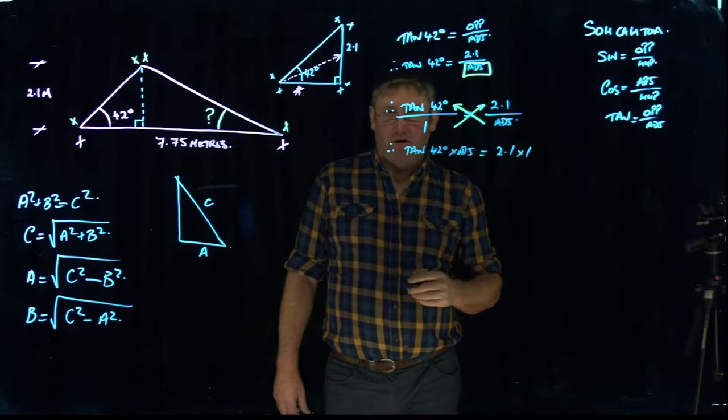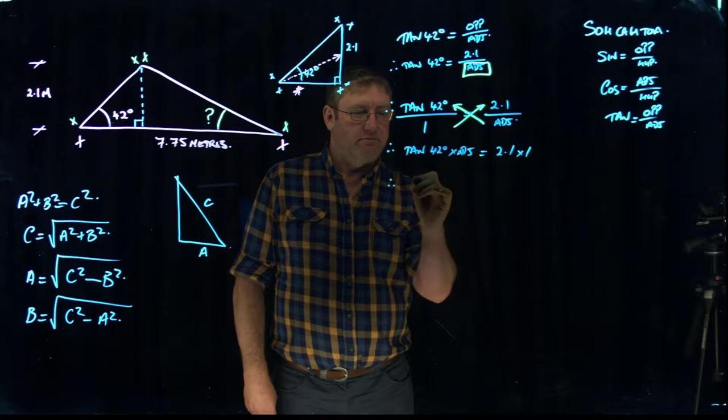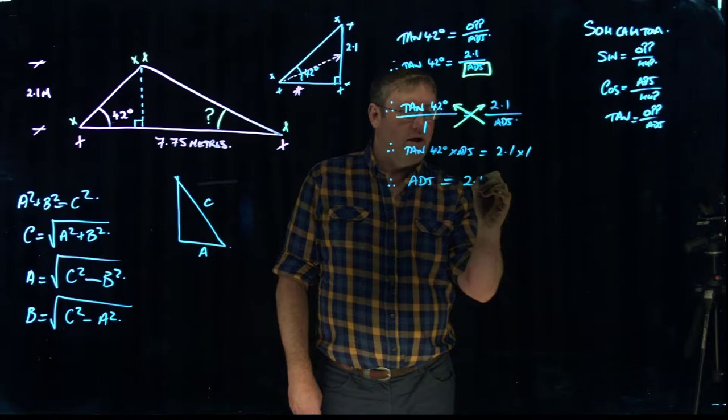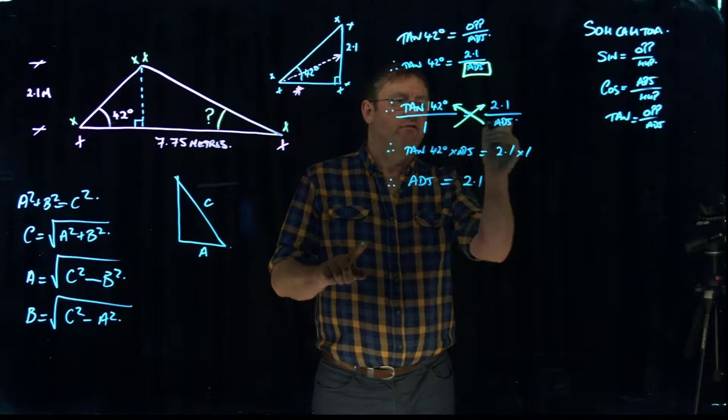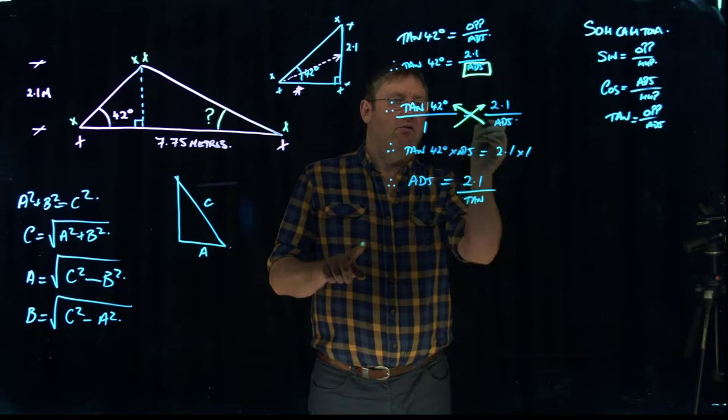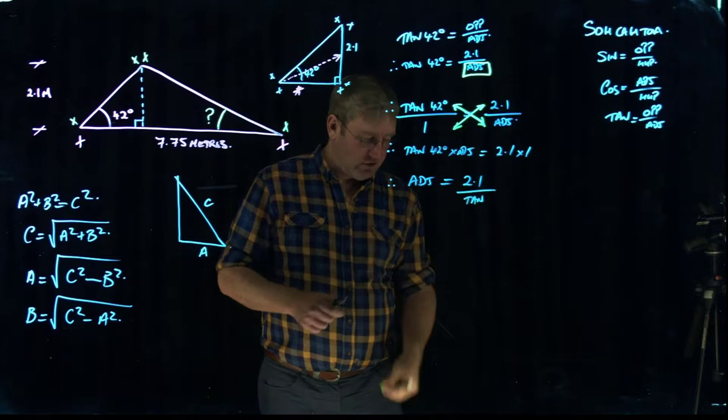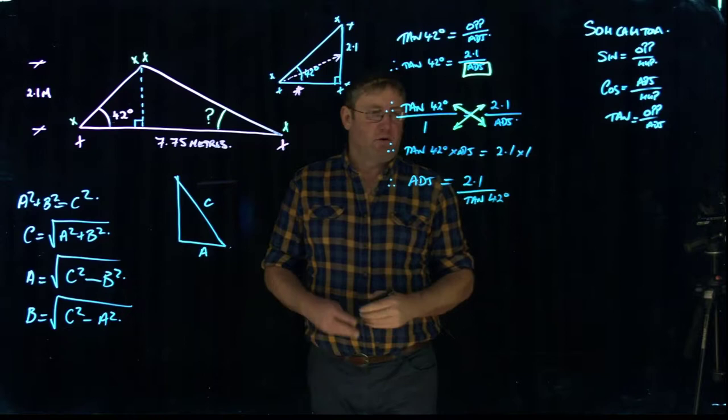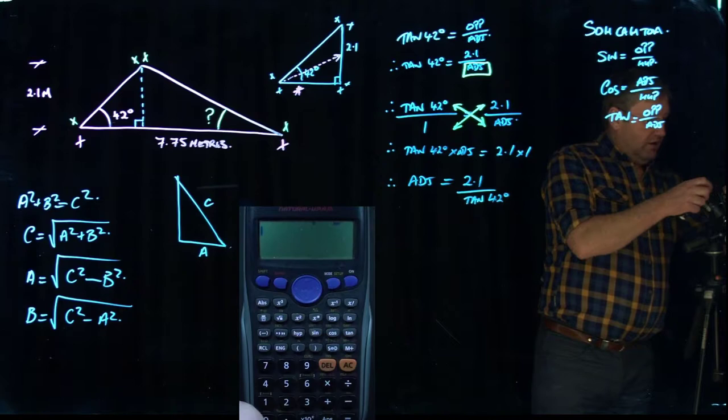So therefore what we're going to do is we're going to have the adjacent on this side equals 2.1. This tan figure is multiplying on this side once again. When we shift it to the other side, it becomes a dividing factor. Doesn't matter which way they go. They still swap over. So when it goes to the other side, it becomes 2.1 divided by tan 42. So on the calculator, turn my phone on. And that's on.